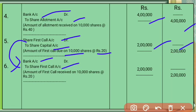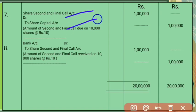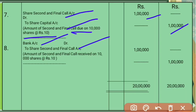For second and final call of ₹10 per share: Share Second Call and Final Call Account debit to Share Capital Account — 10,000 shares at ₹10 = ₹1 lakh. Then on receiving: Bank Account debit to Second and Final Call Account. In this way, all journal entries in the books of accounts of the company are recorded.